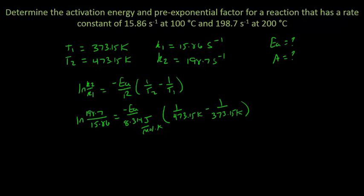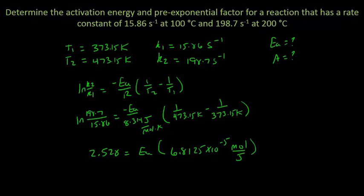Doing the algebra: the natural log of 198.7 divided by 15.86 is 2.528. This equals the activation energy times 6.8125 times 10 to the negative 5th, with units of moles per joule. Solving for Ea gives an activation energy of 37,108.2 joules per mole.